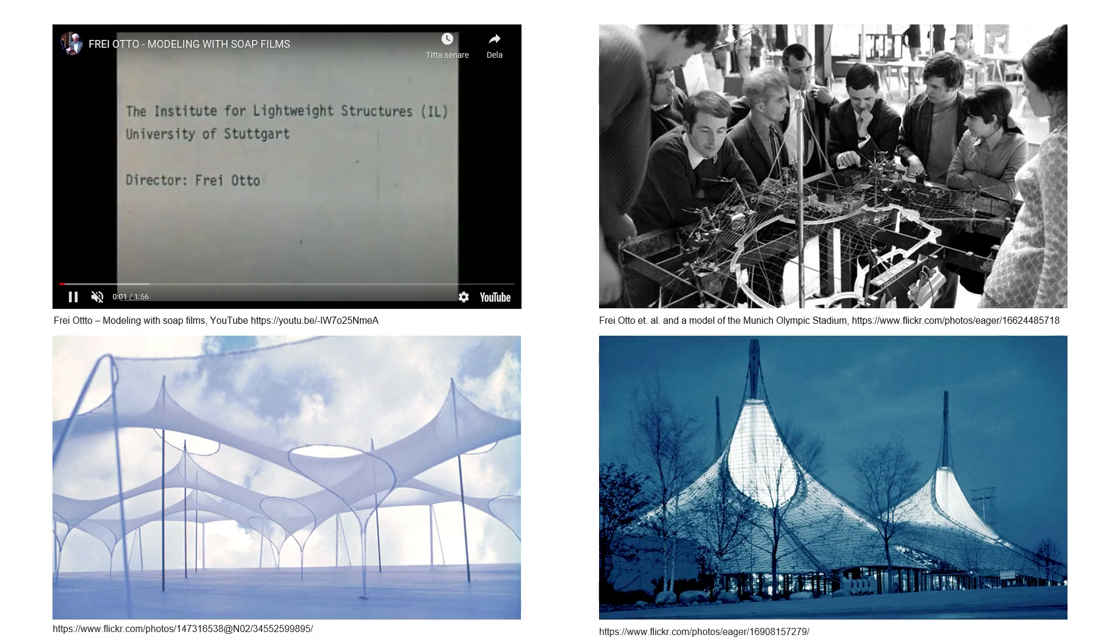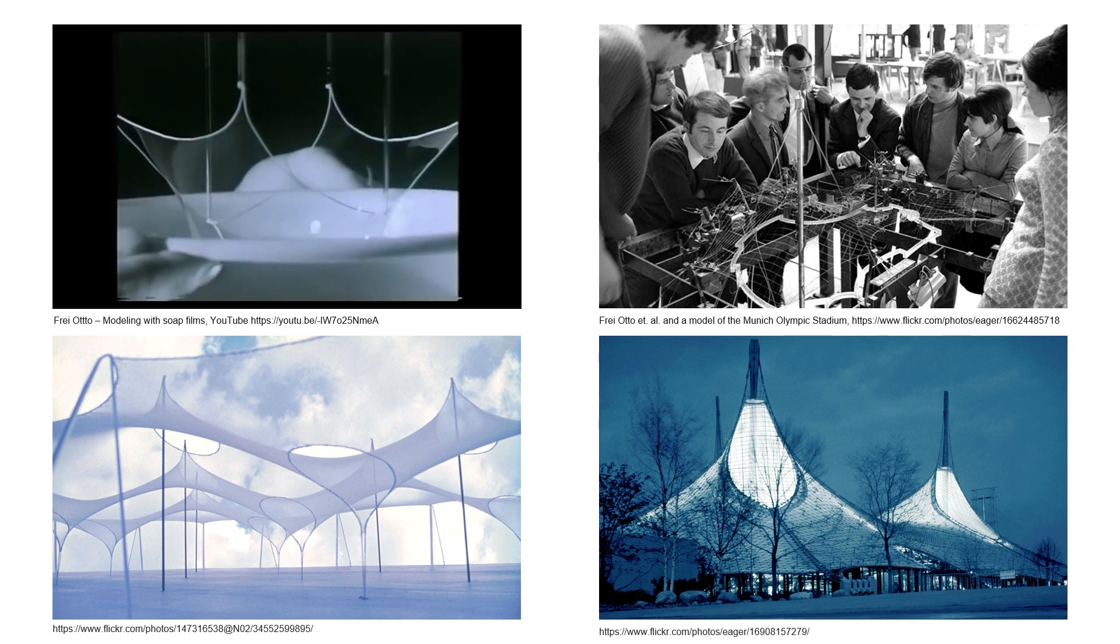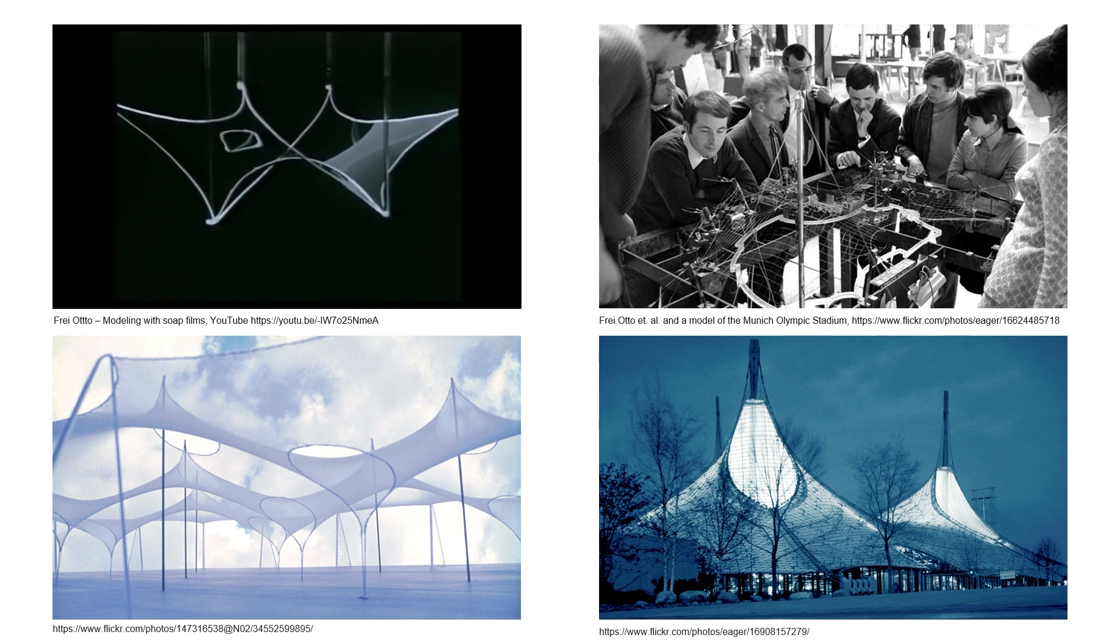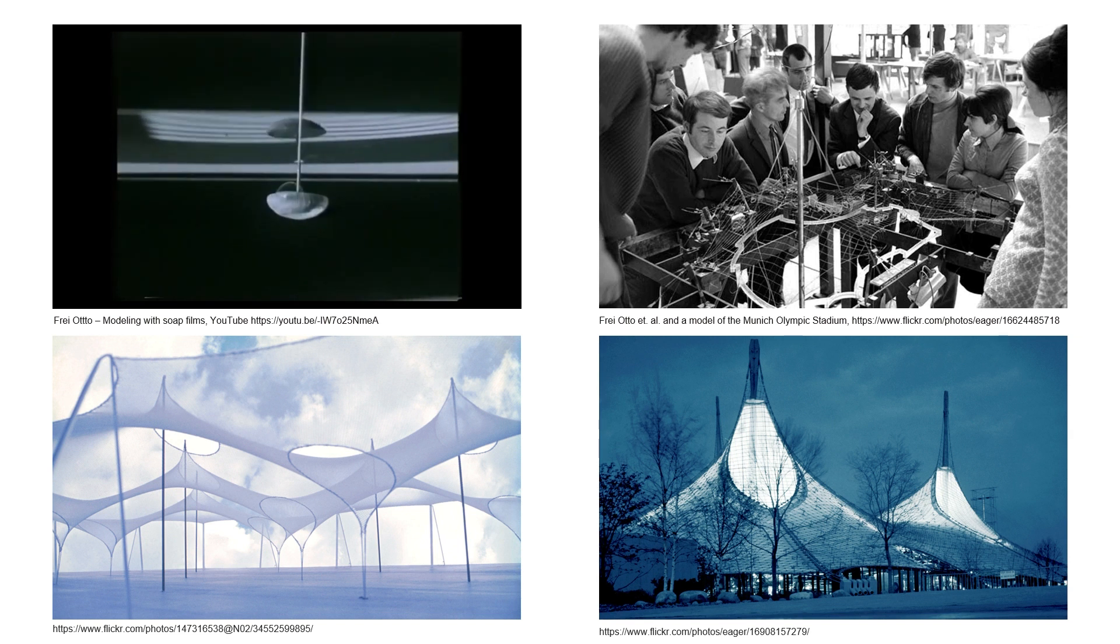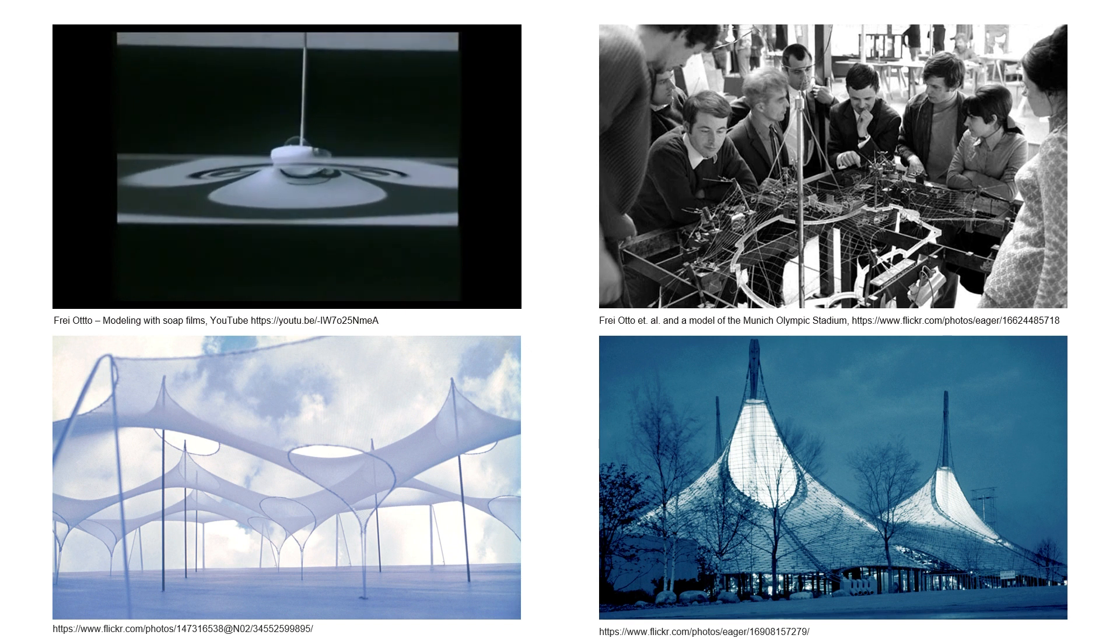Soap films have virtually no thickness and therefore virtually no weight and can be used to physically form find minimal surfaces. Frei Otto knew this and made a very large number of soap film models to form find his many cable net structures.